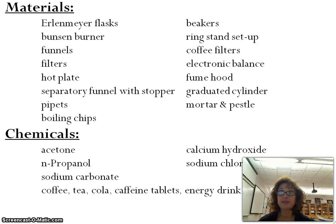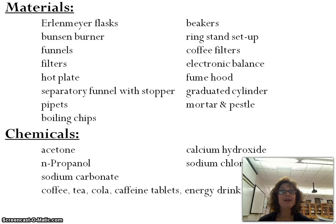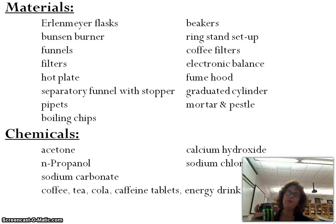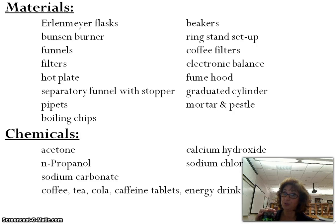Some of the chemicals we're going to use include acetone, fingernail polish remover, normal propanol, sodium carbonate, calcium hydroxide, sodium chloride, and a variety of different caffeine sources. Each person will have their own individual source, and at the end we'll see who can isolate the most caffeine. Sources include coffee, regular tea, cola, over-the-counter caffeine pills, and an energy drink.